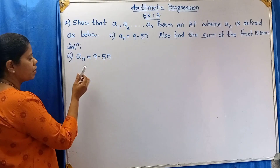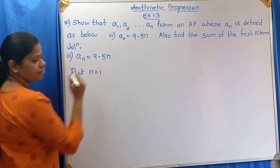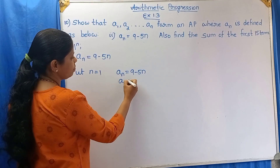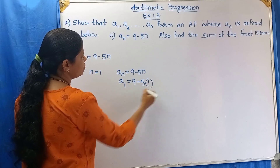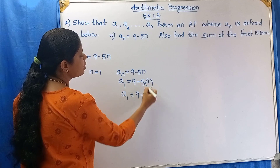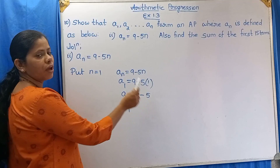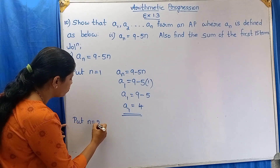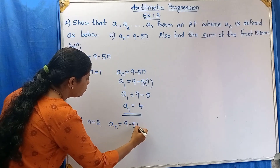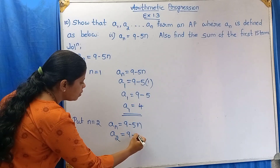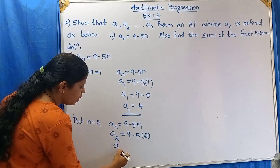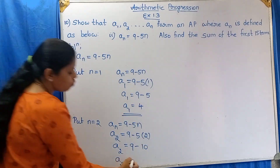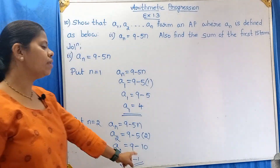To show that the given An is an AP, substitute n = 1 in An = 9 − 5n. A1 = 9 − 5(1) = 9 − 5 = 4. Then put n = 2: A2 = 9 − 5(2) = 9 − 10 = −1.